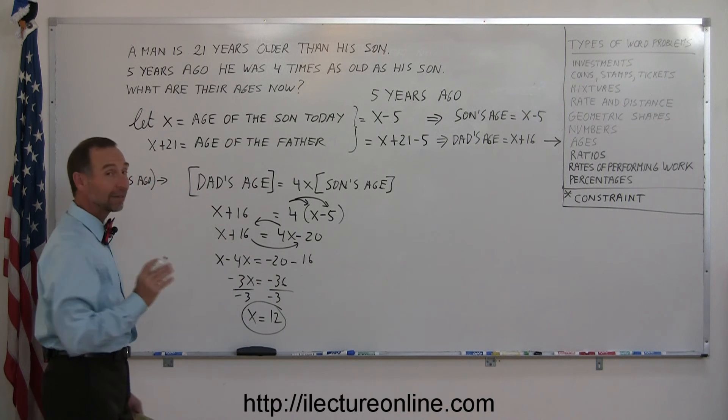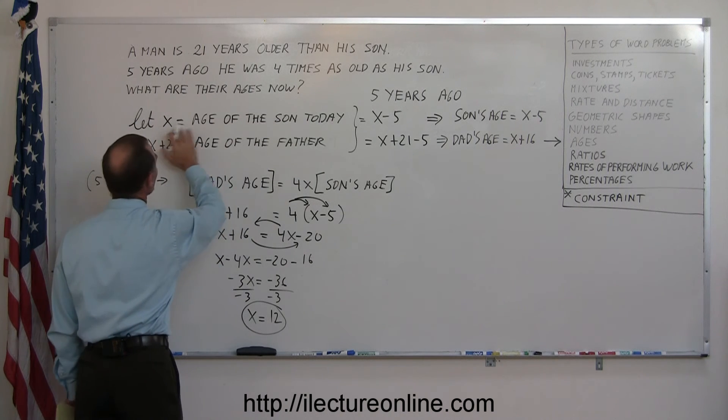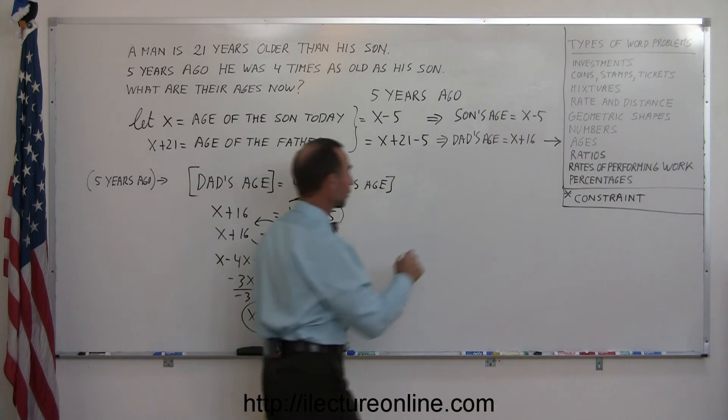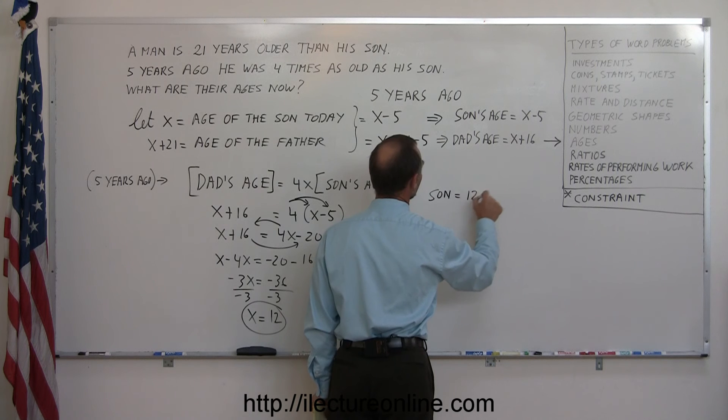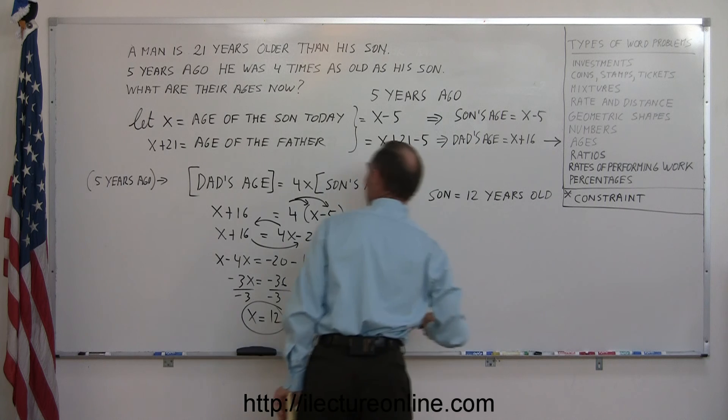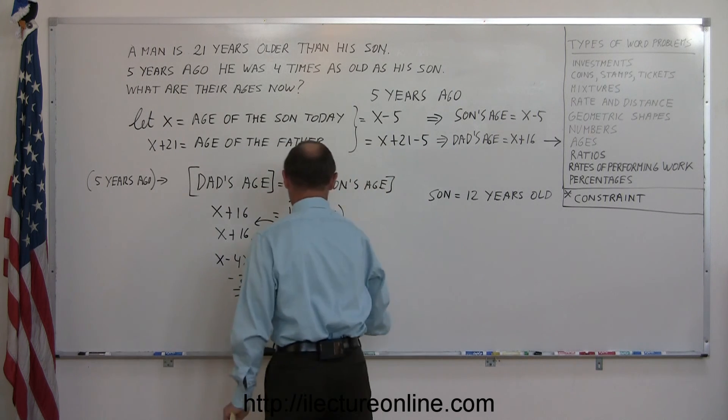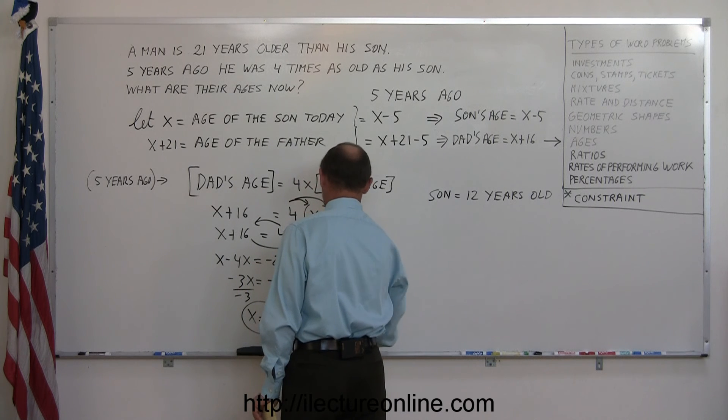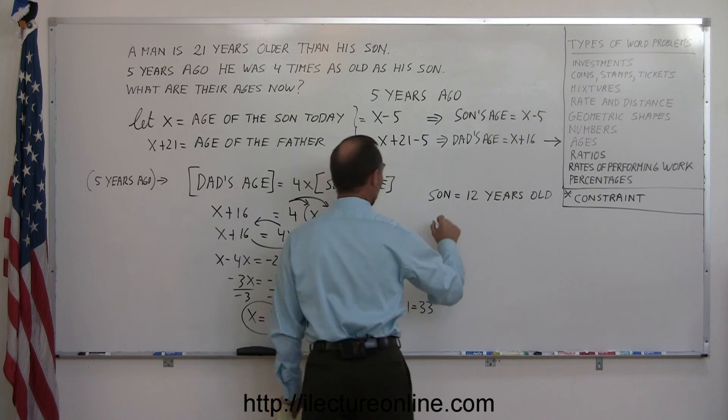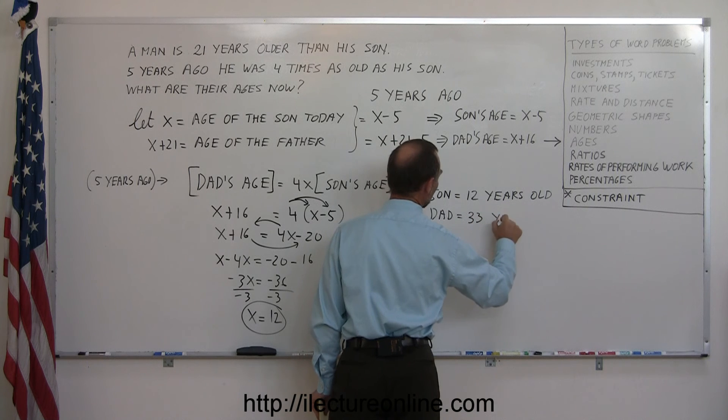Now what does that x represent? Here again, you see the value of really well-defined variables. x is the current age of the son. So x equals 12. That means today the son is 12 years old. And the father today, who's 21 years older than the son. So x plus 21, x plus 21 is equal to 12 plus 21, which is 33. So the dad's age is 33 years old.